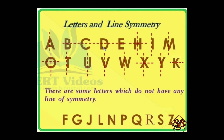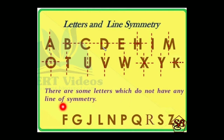These are the alphabets we use in our language. Some of them are symmetrical and some are asymmetrical. The letters A, B, C, D, E, H, I, M, O, T, U, V, W, X, Y, K are all symmetrical — they have either one line of symmetry or more than one. The letters F, G, J, L, N, P, Q, R, S, Z are all asymmetrical alphabets. They do not have any line of symmetry; if we try to draw one, it will not divide them into two equal identical halves.